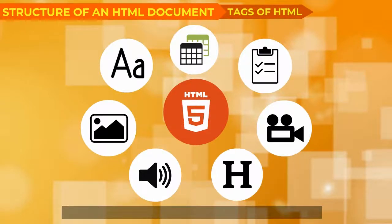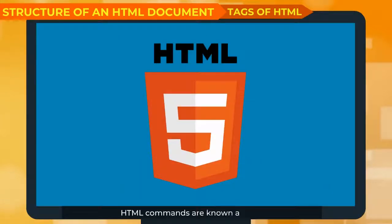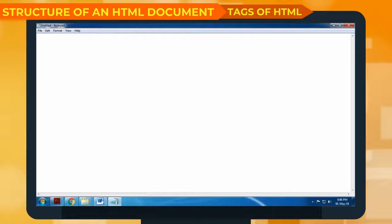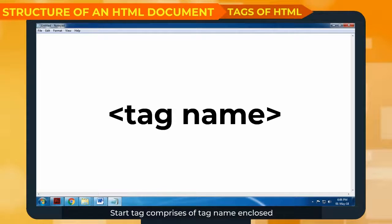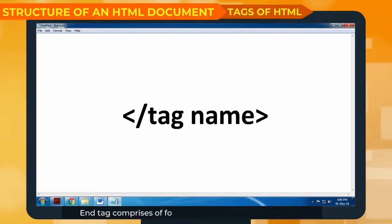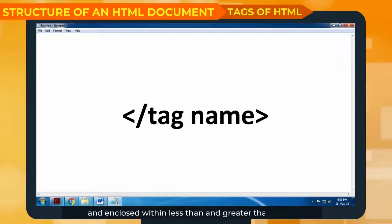HTML commands are known as tags and are written with the following syntax: less-than sign, tag name, greater-than sign. Most HTML tags exist in pairs — a start tag and an end tag. The start tag comprises a tag name enclosed within less-than and greater-than signs. The end tag comprises a forward slash followed by the tag name, enclosed within less-than and greater-than signs. The basic structure of an HTML document must include the following tags.